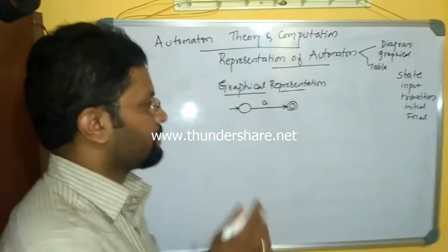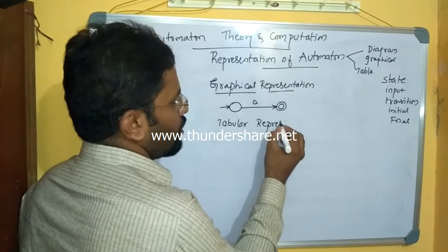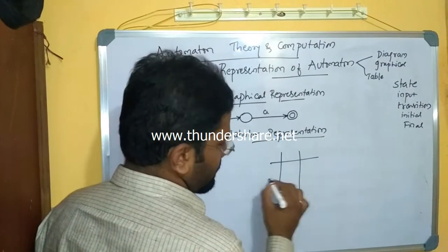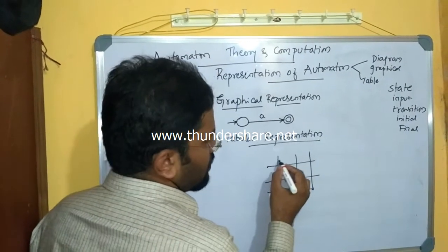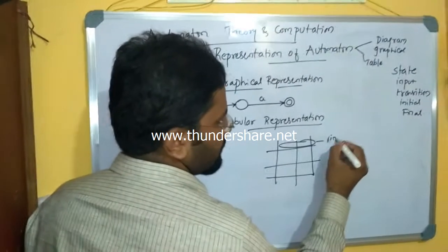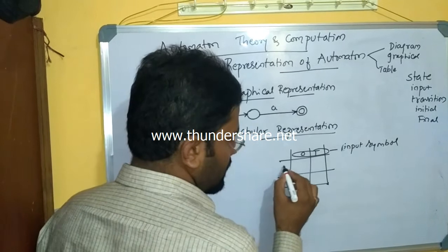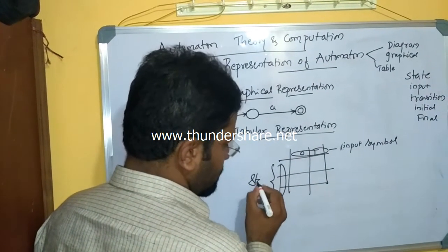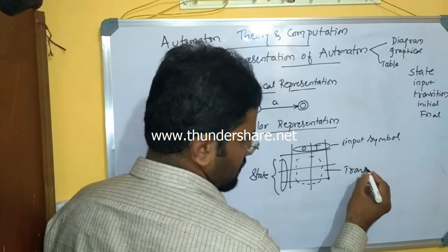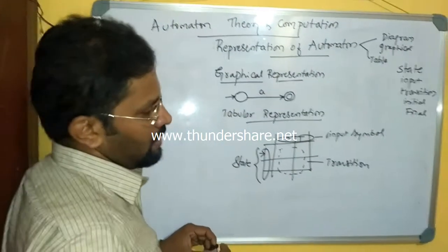Similarly, in a tabular representation, we write a table — a collection of rows and columns. The first row indicates input symbols, such as 0 or 1. The first column indicates states. The entry in the table indicates the resultant state as a transition, and an arrow mark indicates the initial state.